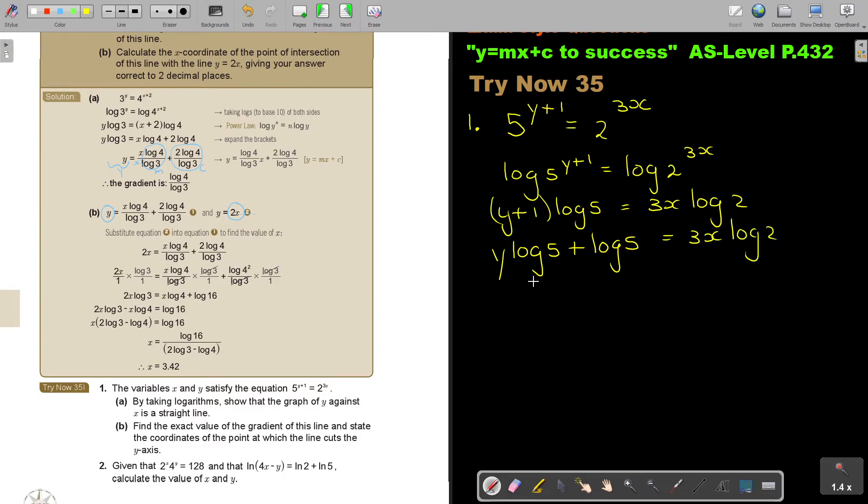This can be simplified to y log 5 plus log 5 equals 3x log 2. I take this one over, so it's y log 5 equals 3x log 2 minus log 5.